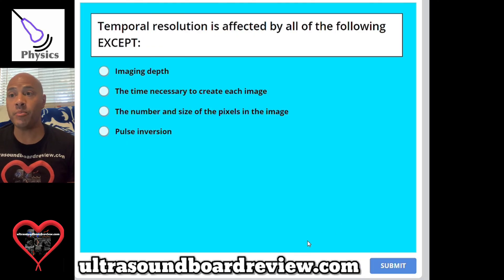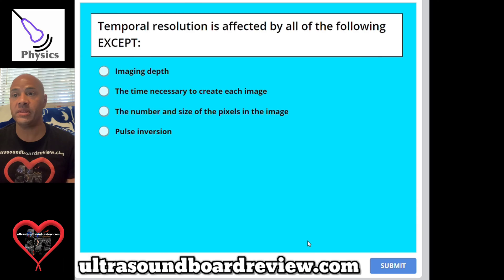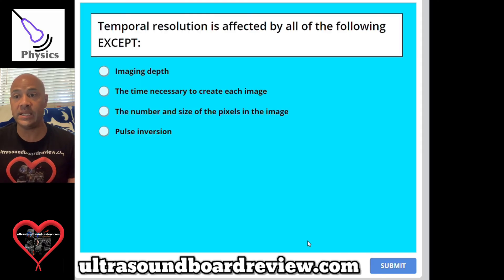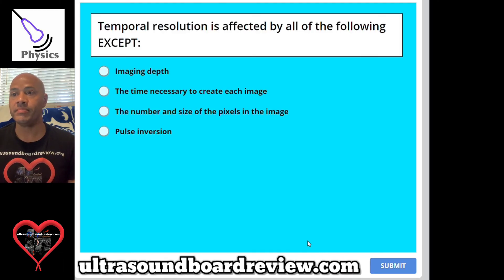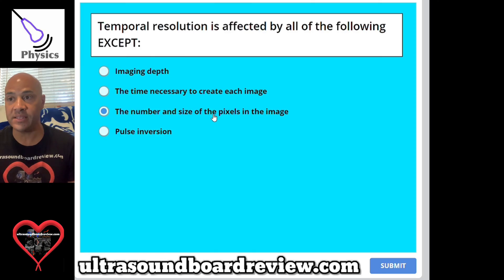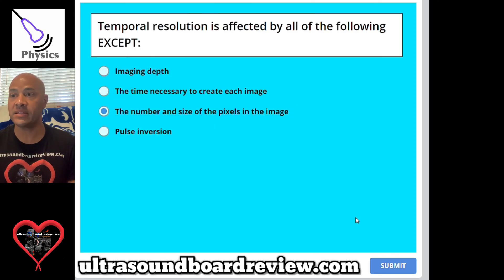Question 55: Temporal resolution is affected by all of the following except A, imaging depth; B, the time necessary to create each image; C, the number and size of the pixels in the image; or D, pulse inversion. The answer is C, the number and size of the pixels in the image — this does not affect temporal resolution.